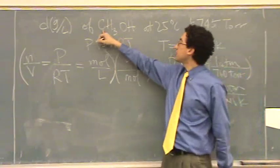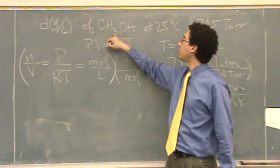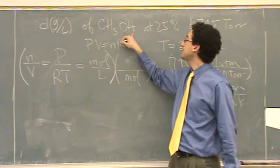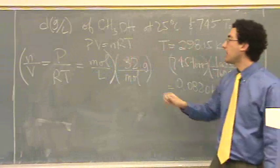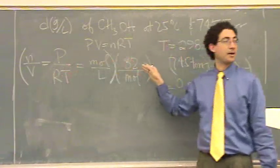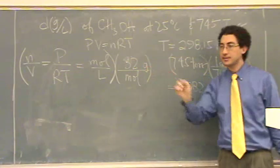So it would be carbon's 12 plus 1, 2, 3, 4. That's 16 plus another 16. It's around 32. You can find it more specifically. But once you get n over V, you multiply by 32. Okay? Does that work for you?